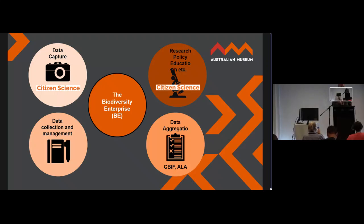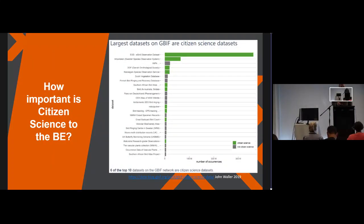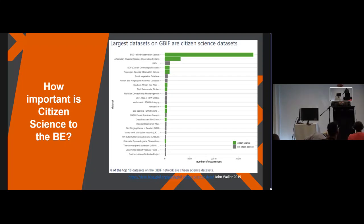Valuing and recognising citizen science is really important because the BE desperately needs citizen science, and citizen science needs funding and support to make the most of it. How do we understand and communicate that value? This is GBF records from datasets, and the first four are citizen science projects, with eBird at the top — a really significant contributor — representing a huge contribution to GBIF's data.